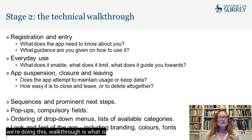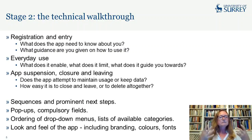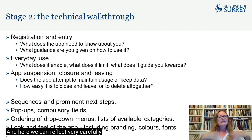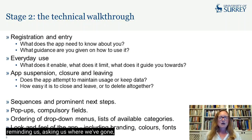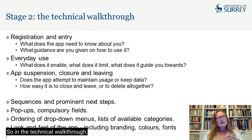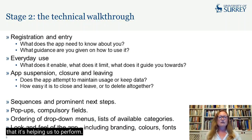We need to think, when we're doing this walkthrough, what is the preferred way of using this app, and what does that then suggest about who the preferred user is and how they will relate to it. We then complete the technical walkthrough by suspending, closing, and leaving the app. Here we can reflect on whether the app attempts to maintain usage, does it attempt to keep our data, does it try and keep a relationship by reminding us or asking us where we've gone, and how easy is it to close and leave or to delete it altogether. In the technical walkthrough, we go through the whole span of the relationship that an everyday user might have with the app, asking how it builds a preferred way of going about that everyday experience.